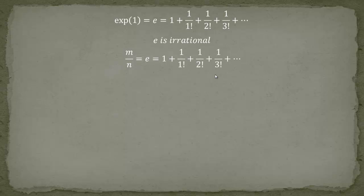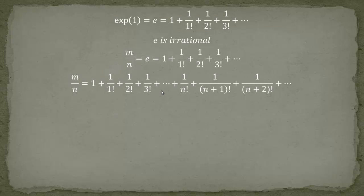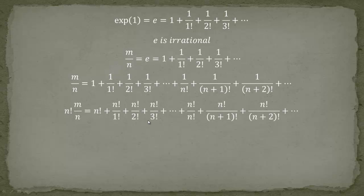We take the series and break it up after n factorial, leaving a remainder: 1 over n plus 1 factorial, plus 1 over n plus 2 factorial, and so forth. The important part is that we split the series into a left side and a right-hand side. Then we multiply the entire equation through by n factorial. On the left-hand side, you get n minus 1 factorial multiplied by m, because the n from the denominator and the n in the factorial expression cancel.